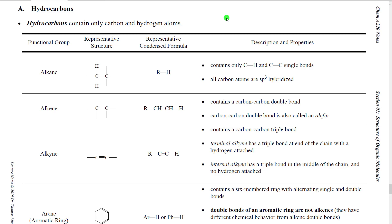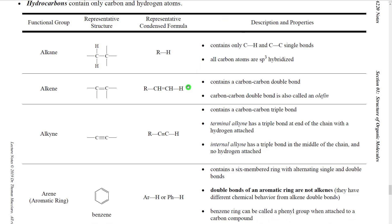The first set of functional groups are called hydrocarbons — molecules that contain only carbon and hydrogen atoms. They generally differ based on whether they contain multiple bonds or not. The most fundamental type of organic molecule is called an alkane. Alkanes contain only carbons and hydrogens with only single bonds. When we discuss bonding theory, we'll see that all the carbons in an alkane are sp3 hybridized.